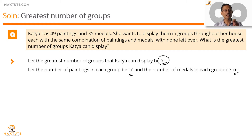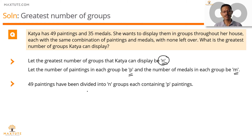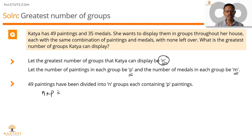Each group will have P paintings, and the number of paintings across all groups is going to be the same. The number of medals in all of the groups is also going to be the same. She's got 49 paintings divided into N groups with each group having P paintings, so N × P = 49.